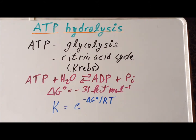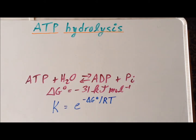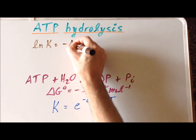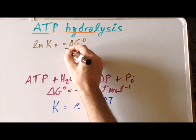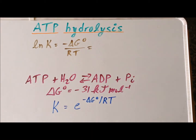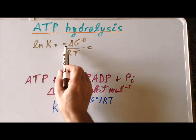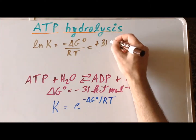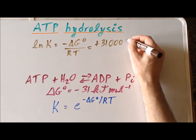We are going to calculate the equilibrium constant of this reaction using the fact that the standard Gibbs free energy is equal to minus 31 kilojoules per mole. Taking the natural logarithm of each side, the natural log of K equals minus delta G naught divided by RT. With a minus sign on both sides, the numerator becomes positive 31 kilojoules per mole, or 31,000 joules per mole — converting to joules to match the units of R.